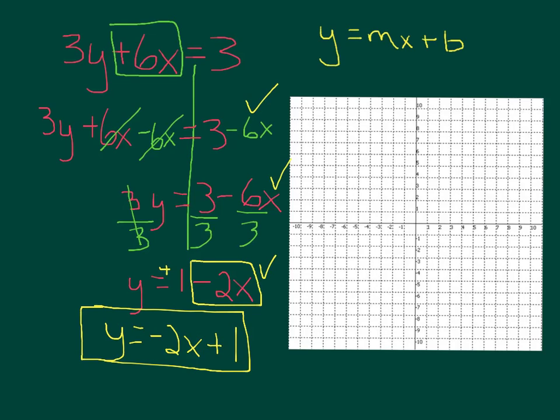Now let's graph this equation. The y-intercept is at +1. Then the slope is -2, which is -2 over 1. So down 2, right 1. Down 2, right 1. Then go backwards, up 2, left 1. Then you can connect.